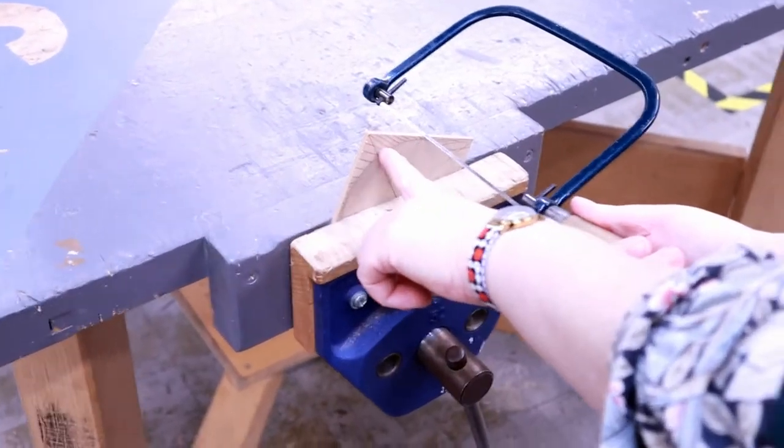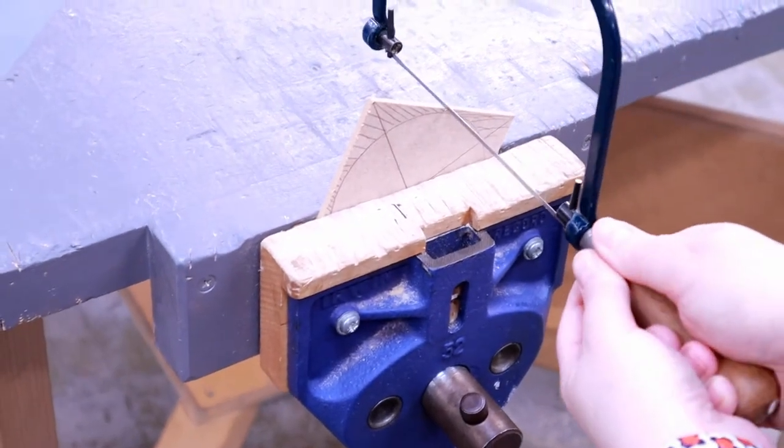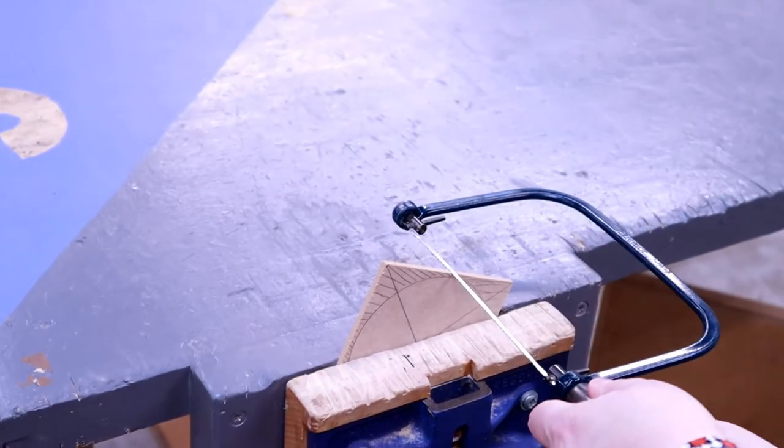So because I want to cut out the circle, I need to actually start my saw right at an angle, so not up like this, but right at an angle.